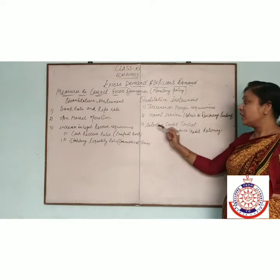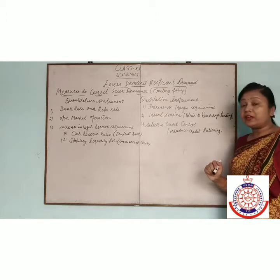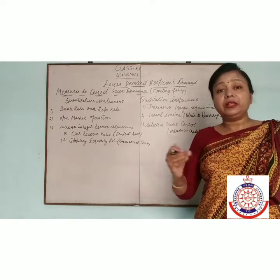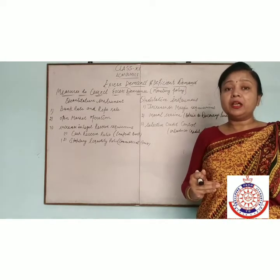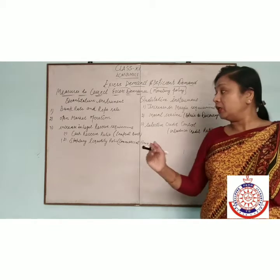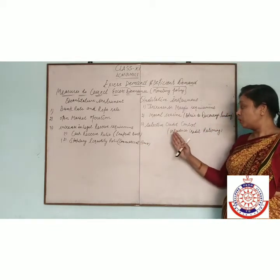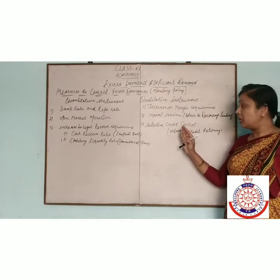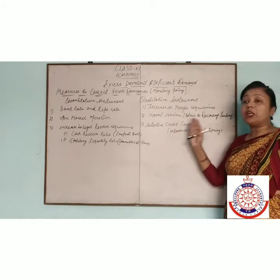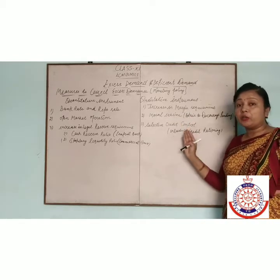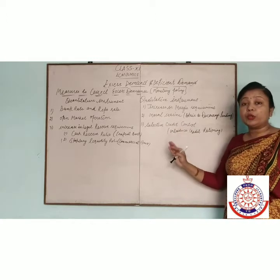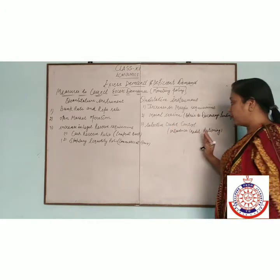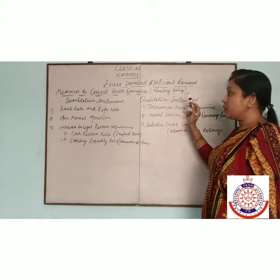Last is selective credit control, which means credit rationing. Credit rationing means there are different sectors in the economy and RBI gives instructions to the commercial bank. There is a fixing of quota to the commercial bank — for productive purposes, unproductive purposes — specifying which areas are to receive more loans and that loans are not to be given for speculative purposes. These are the qualitative instruments.